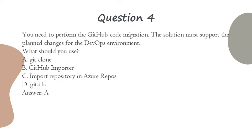Question 4. You need to perform the GitHub code migration. The solution must support the planned changes for the DevOps environment. What should you use? A. Git clone. B. GitHub Importer. C. Import repository in Azure Repos. D. Git TFS. Answer: A.